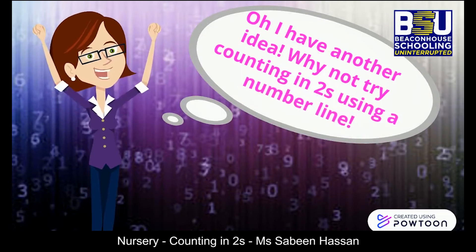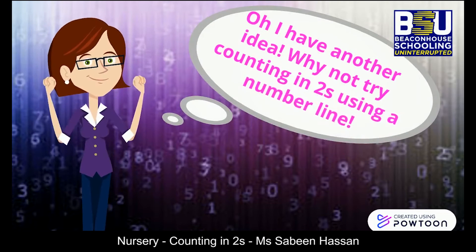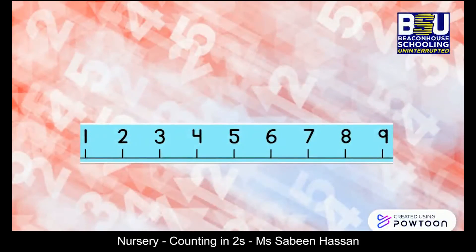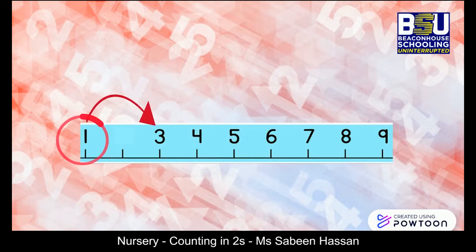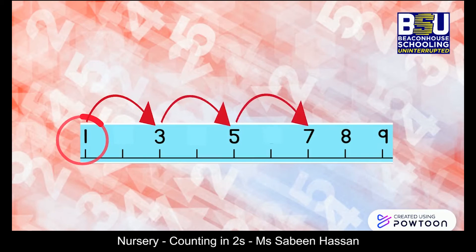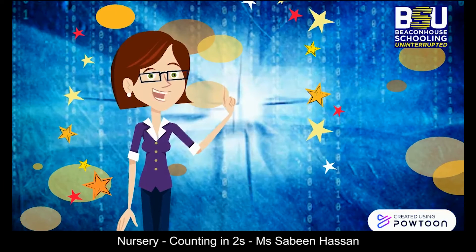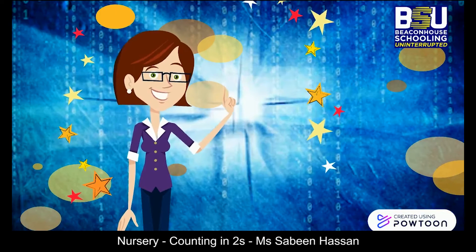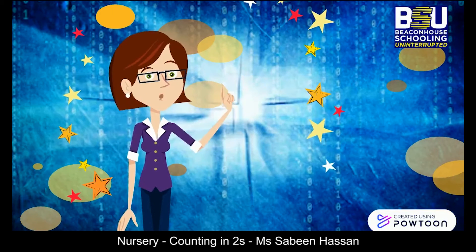I have another idea — why not try counting in twos using a number line! Here's the number line, and this time we'll start from number one. We'll skip two and go to three, then five, seven, and nine.